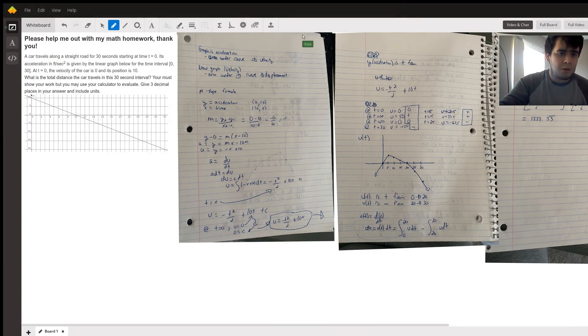Hello everyone. This question is saying that a car travels along a straight road for 30 minutes starting at time equals zero. Its acceleration per second is given by the linear graph below for the time from 0 to 30. At t equals 0, the velocity of the car is 0 and its position is 10. What is the total distance the car travels in its 30 second interval? You must show your work but you may use your calculator to evaluate. Give three decimal places in your answer and include units.